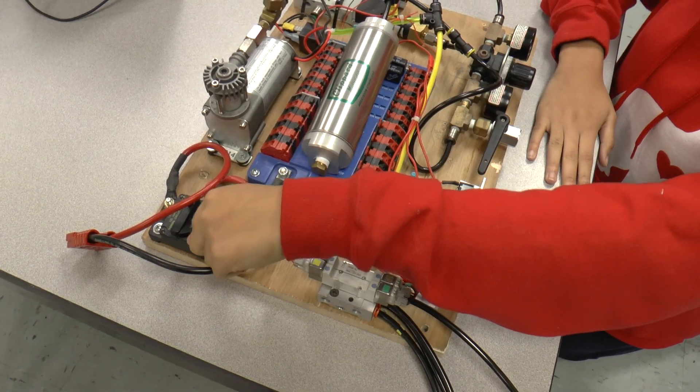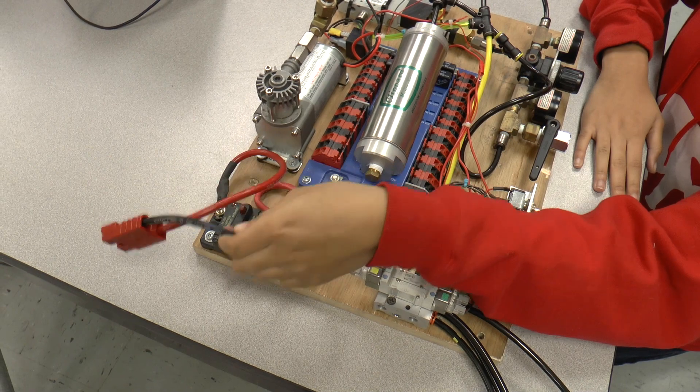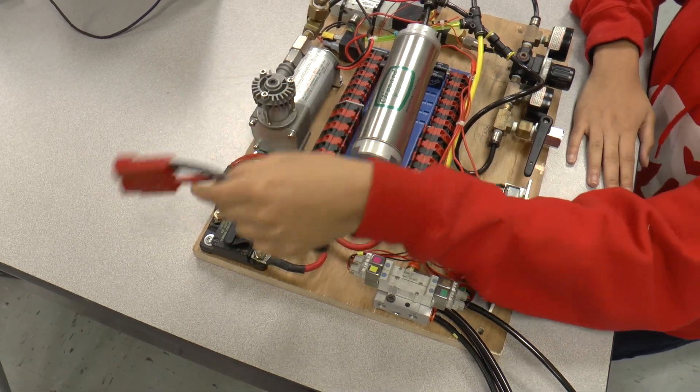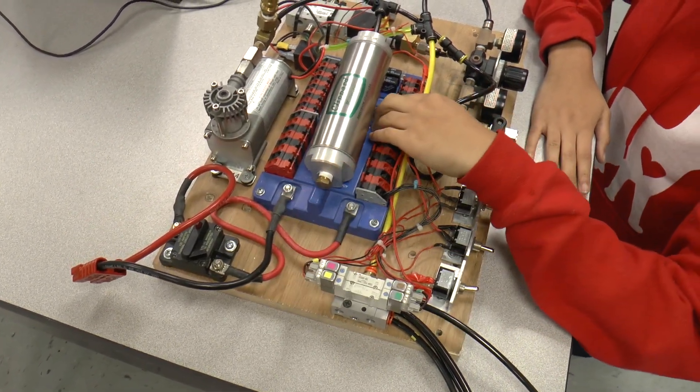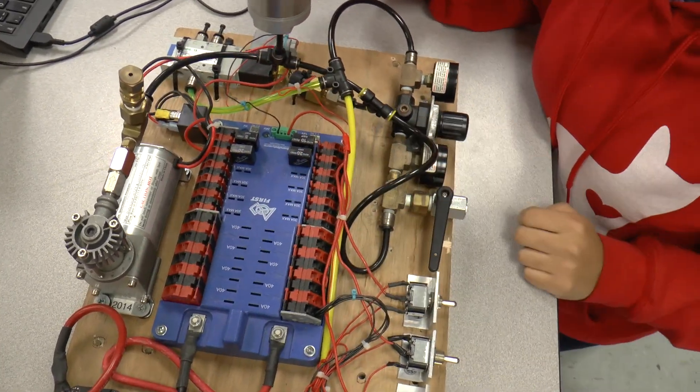It has the 120 amp circuit breaker that connects to the wires where we connect the battery. And the wires connect to the PDP with four smaller circuit breakers.